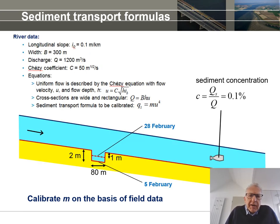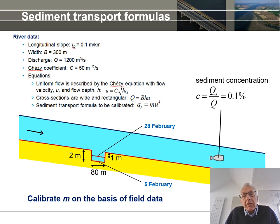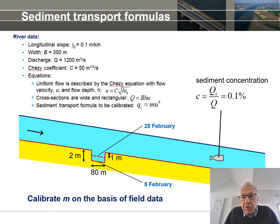Here we see the same data again with some additional information. There have been sediment concentration measurements, and it is found that the concentration — the ratio between the transport of sediment and the transport of water, the discharge — is equal to 0.1%.